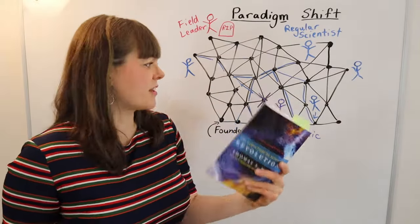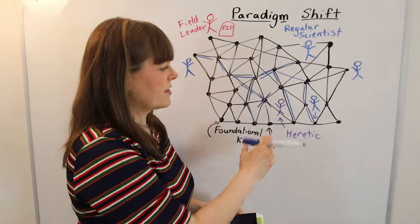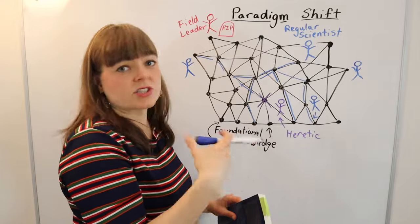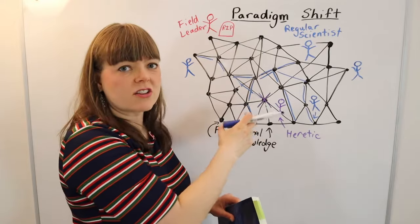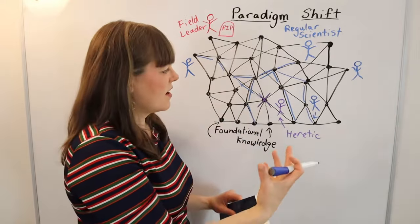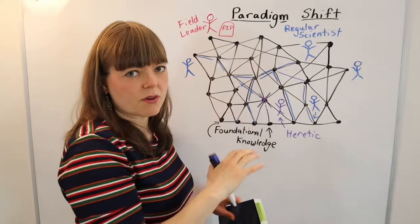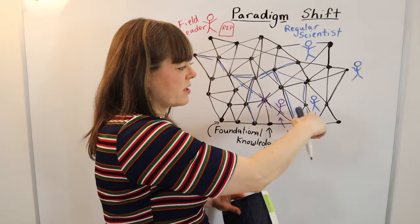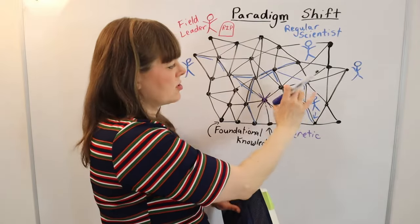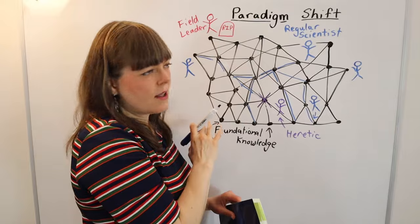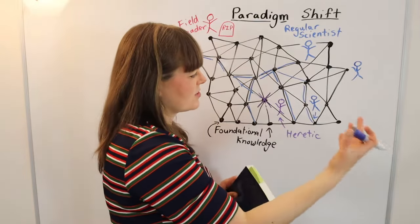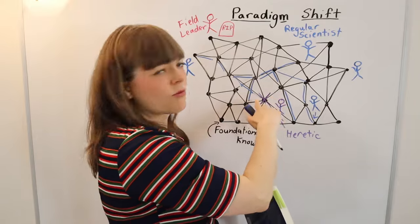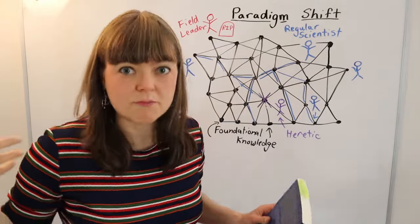One controversial element here is that when you have a paradigm shift that sort of rejects some foundational knowledge, sometimes it rejects it too much, and you could have knowledge that's actually lost. For example, if we just completely get rid of this node, maybe there actually is something to that node. It just doesn't fit well with the new foundational knowledge. So maybe these people will reject it. And maybe in some future situation, some of these heretic scientists will come and try to reconcile this in a way that it hasn't been reconciled.